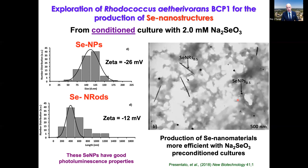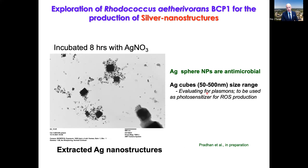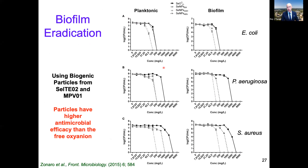When we initially tried to make selenium nanoparticles with BCP1, it was a mess — some material produced outside the cell and didn't work well. With time, though, we figured out how to adjust the physiology and growth conditions to get quite nice rods and particles, and we can select the physiology to favor one or the other. My new graduate student is working on silver with this bacterium, and we were able to make both cubes and nanoparticles — the nanoparticles are quite antimicrobial, and the cubes have potential as photosensitizers for ROS production.